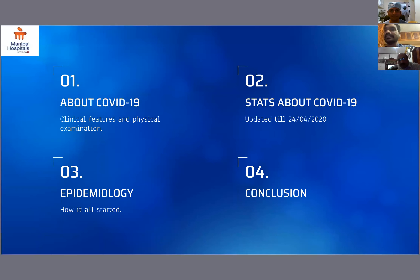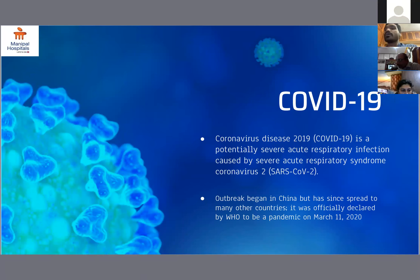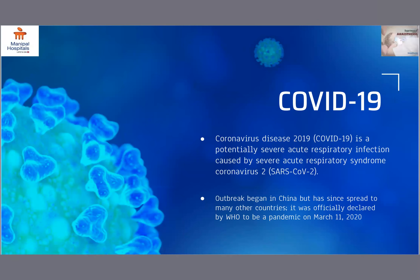Stats about COVID-19 up-to-date and the epidemiology. COVID-19 disease, 2019 disease, is a potentially severe acute respiratory infection caused by Severe Acute Respiratory Syndrome Coronavirus 2, or SARS-CoV-2. The outbreak began in China but has since spread to many other countries. It was officially declared by WHO to be a pandemic on March 11, 2020.